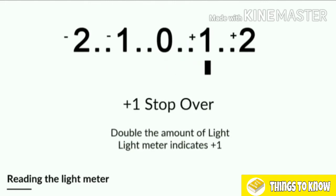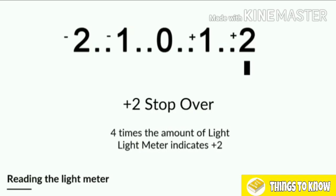If the light meter indicates plus 1, that means it's one stop overexposed — double the amount of light is coming into the scene. So before even taking the photograph, I'd know the image is going to be overexposed. At plus 2, it doubles again — four times the amount of light. So plus 1 stop means double the light, plus 2 stops means four times the amount of light, which would be very overexposed.